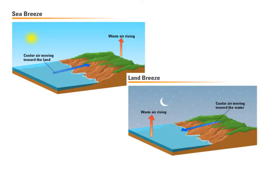Let's take a look at our first local wind pattern. One interesting thing about winds is we name them from the direction from which they blow. So when we have a land breeze, we're talking about wind that is coming from the land out to the ocean. That's why we call it a land breeze — because it's coming from the land.